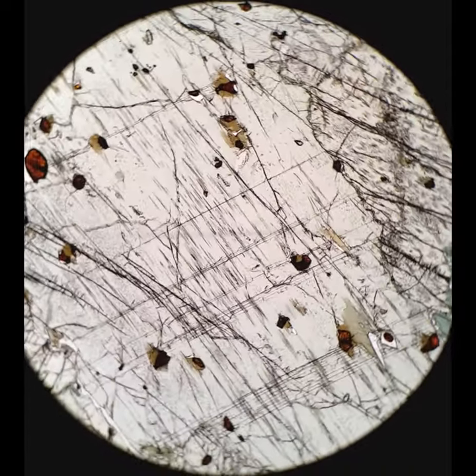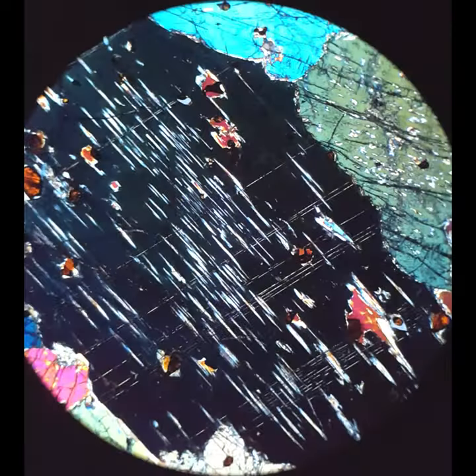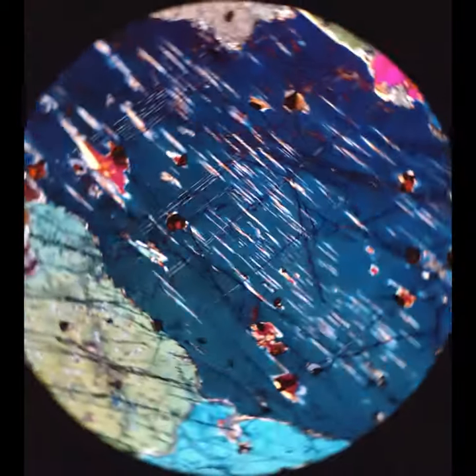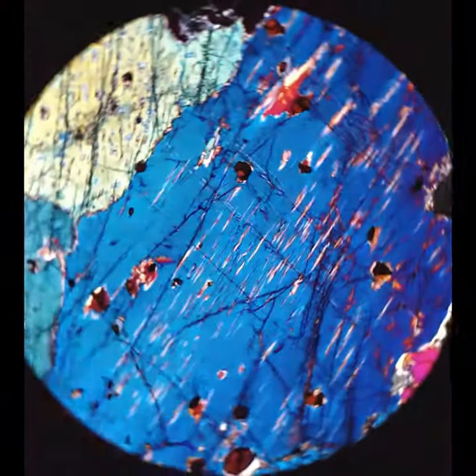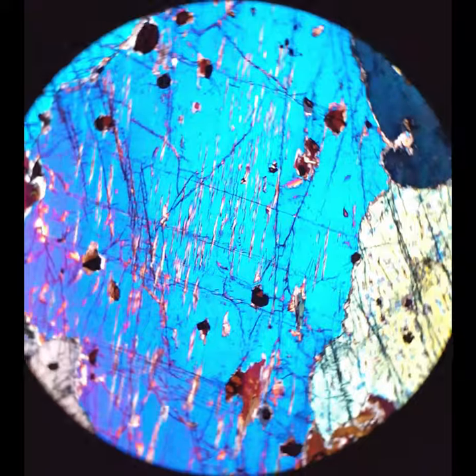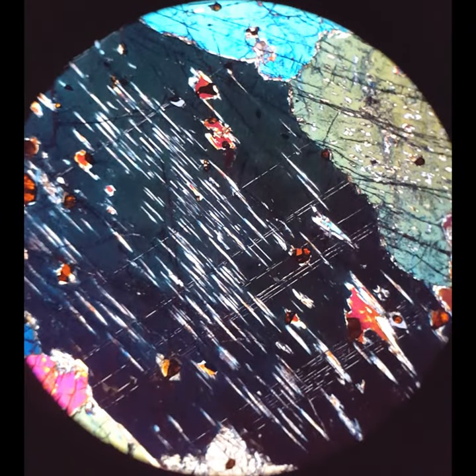Pyroxenes will sometimes exsolve other minerals in them. That's what you're seeing here is that a high-pressure pyroxene has exsolved some other minerals that are crystallographically oriented. That crystallographic orientation helps you see that this pyroxene has inclined extinction.